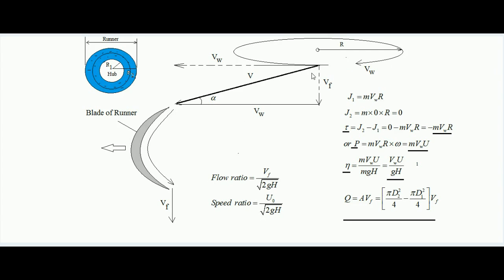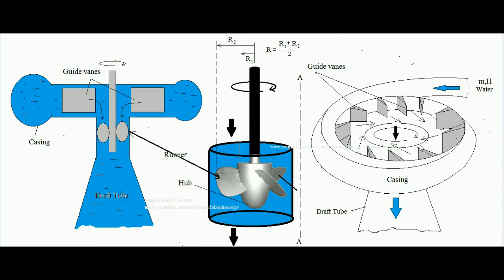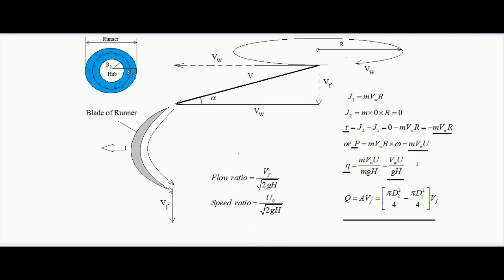Initially water enters the blade with tangential component Vw, but finally when it leaves the blade it only has axial velocity — there is no Vw. Angular momentum is given by mvr, where m is the mass of the rotating entity, v is the tangential velocity, and r is the radius about which the mass is rotating. Since the tangential velocity of water going to interact with the runner is Vw, the initial angular momentum J1 equals m·Vw·r.